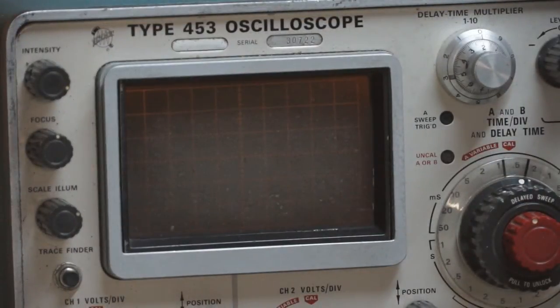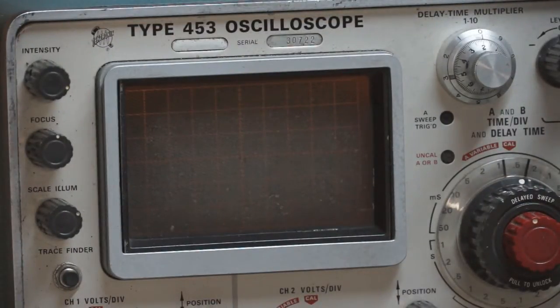The oscilloscope is set in single sweep mode. It will be triggered by the sound of the snap hitting the first microphone and start drawing a trace. Once the sound gets to the second microphone, its trace will show that the sound has arrived and we'll be able to count the divisions to see how long it took to get from one microphone to the next.